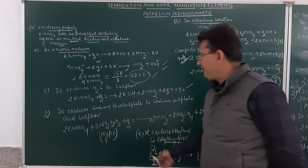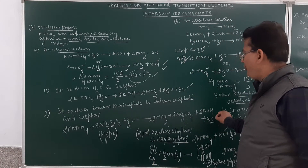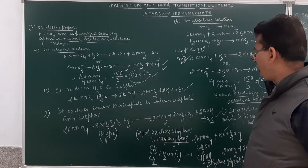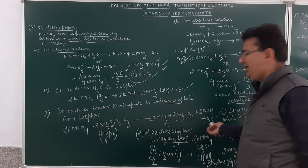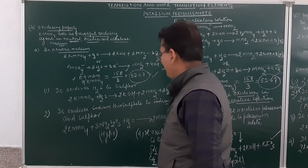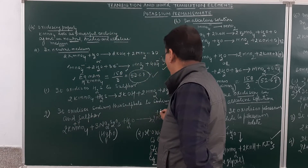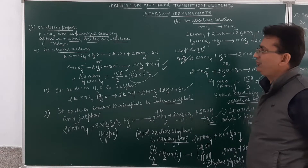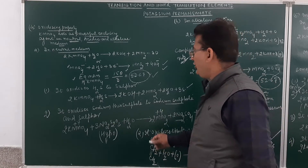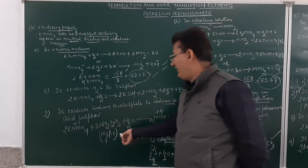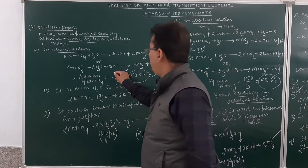It also oxidizes sodium thiosulfate — also called hypo — to sodium sulfate and free sulfur. In this reaction, the oxidation number of manganese is +7, and when it gains 3 electrons it becomes +4. So it changes from the +7 oxidation state to the +4 oxidation state, oxidizing H2S to sulfur and sodium thiosulfate to sodium sulfate and sulfur. The equivalent weight is 158 divided by 3.